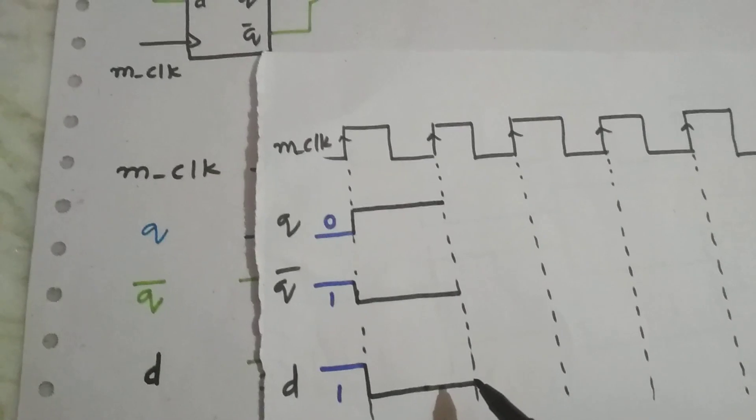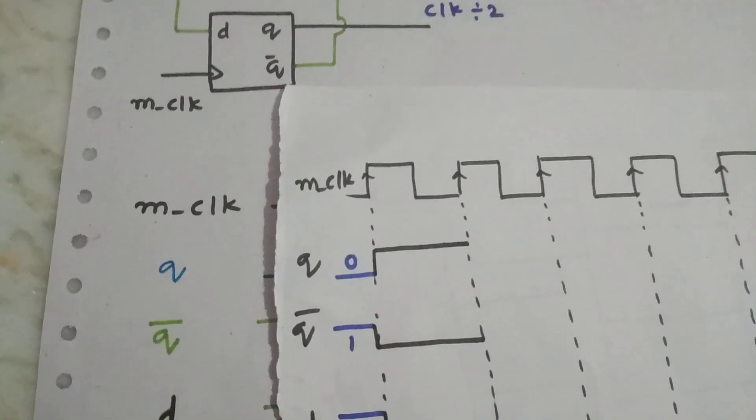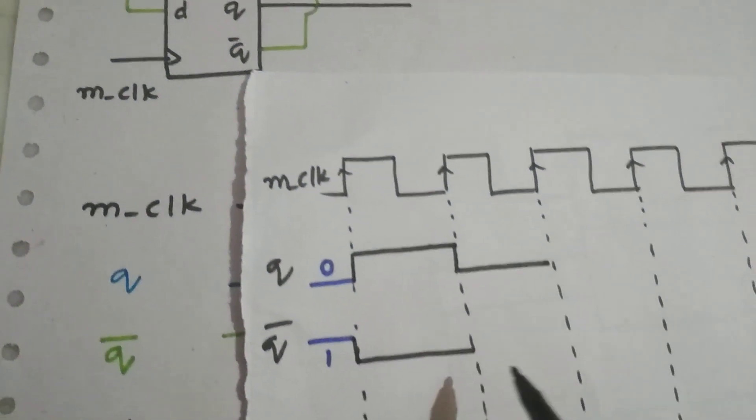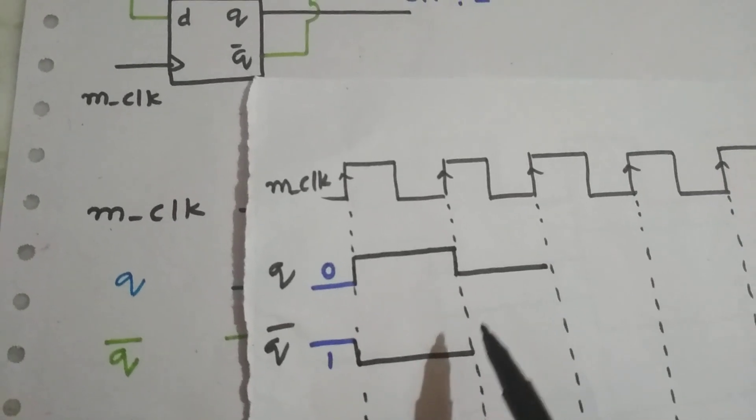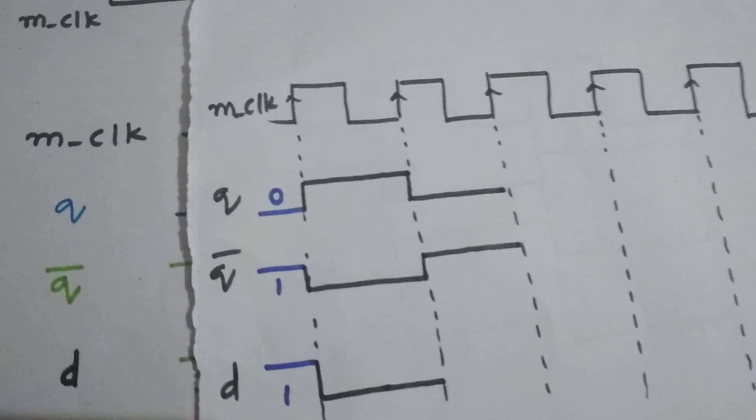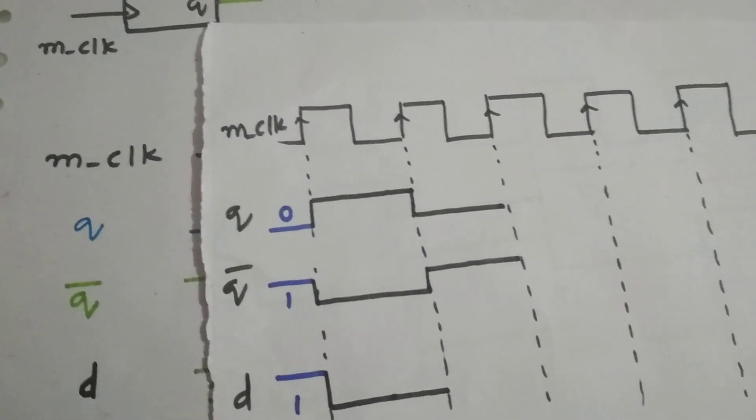Now again this D is fed back to Q. So the D is 0, so Q will become 0 at this positive edge. Now the Q has become 0 and Q bar will be the opposite of Q, so now it will become 1 once again. Since Q bar is fed into D, now D will also become 1.